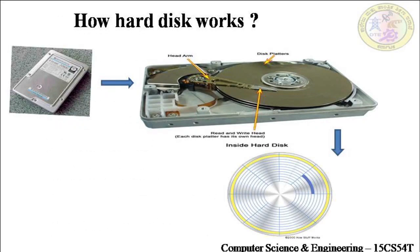What you see in the first part is the hard disk present in a standard personal computer — it's basically inside an aluminum casing. Once you open up that casing, it reveals the second diagram. Here you can see three important parts: the head arm, the disk platter, and the read and write head. The head arm provides for the mechanical movement of the read and write head.